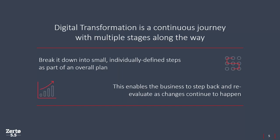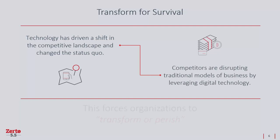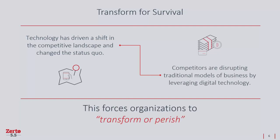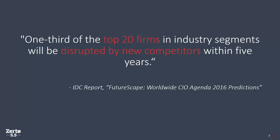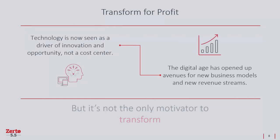Let's look at the three main reasons why businesses are going through these transformations. Perhaps the most blatant reason to transform is to survive. Technology has opened up new opportunities and driven a shift in the competitive landscape. Newer businesses leveraging digital technologies are disrupting established markets, so traditional businesses must simply transform or perish. IDC states that one-third of the top 20 firms in industry segments will be disrupted by new competitors within five years.